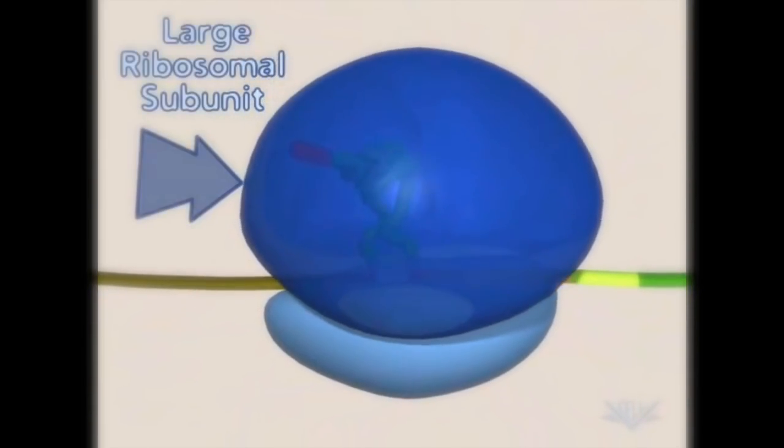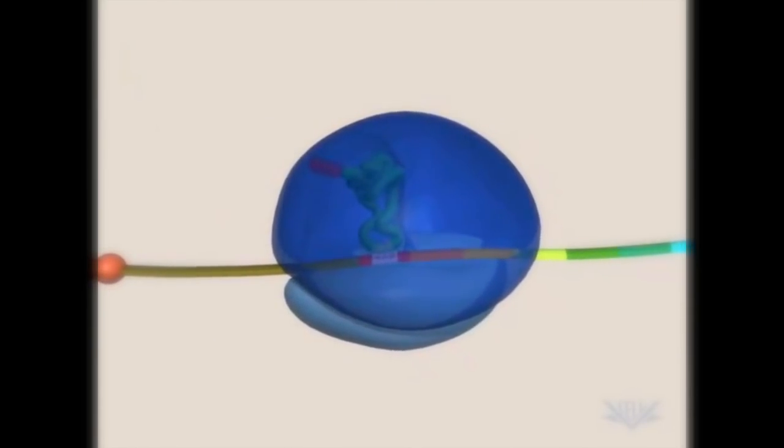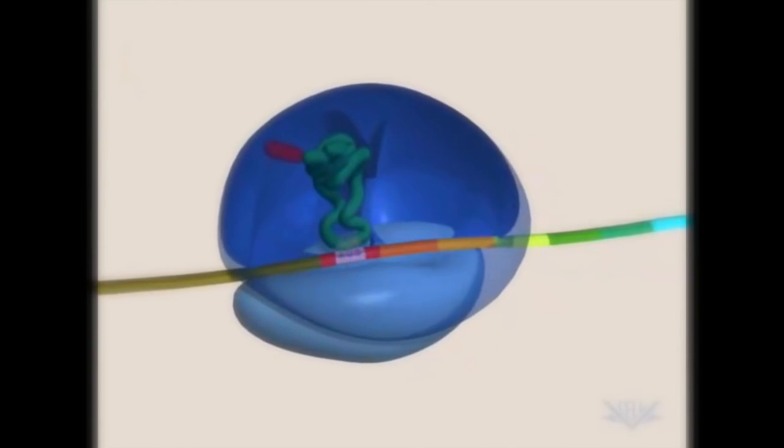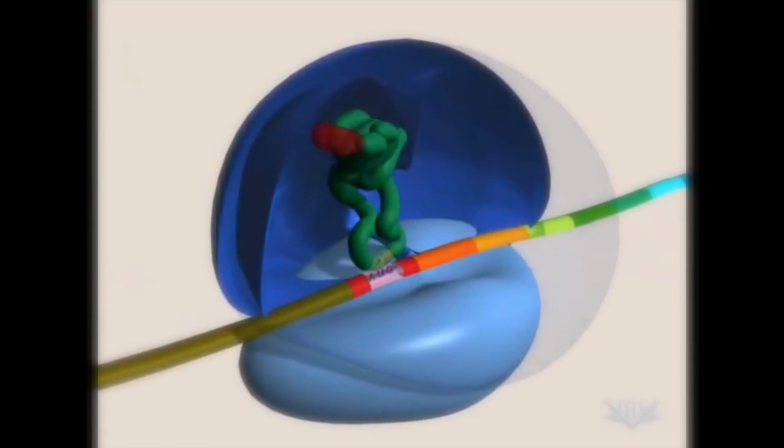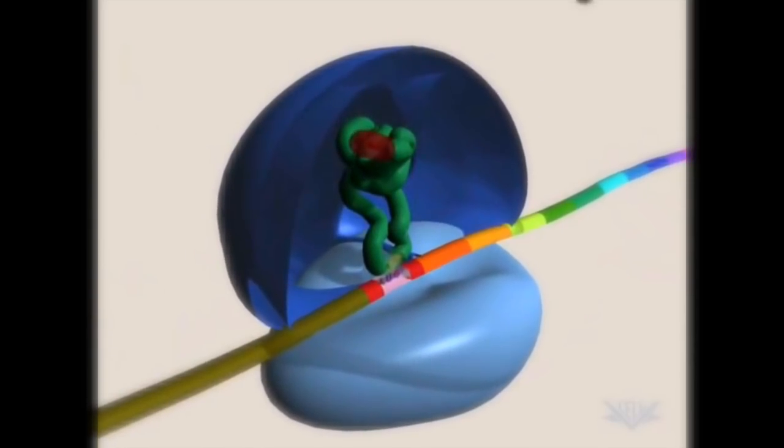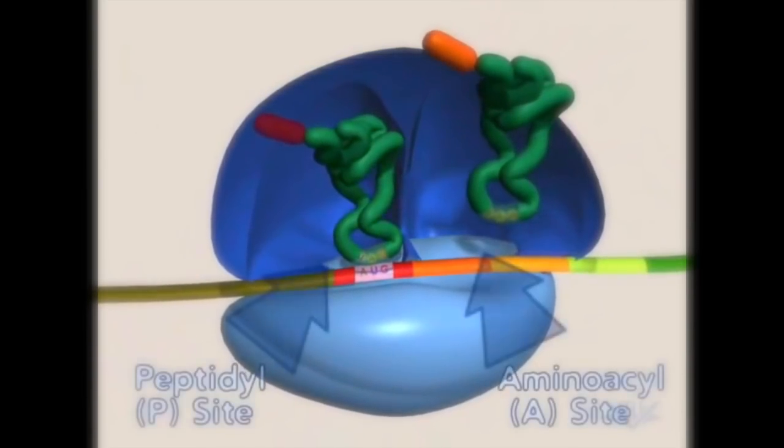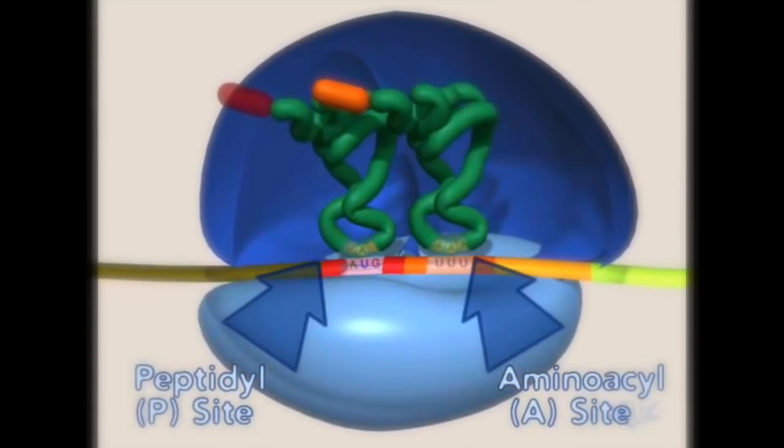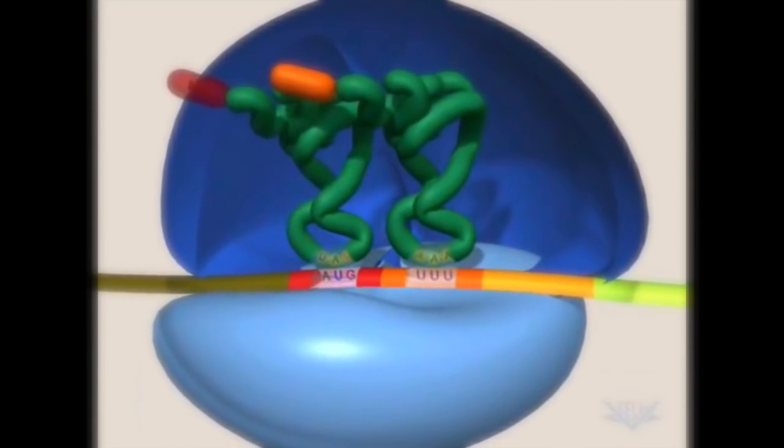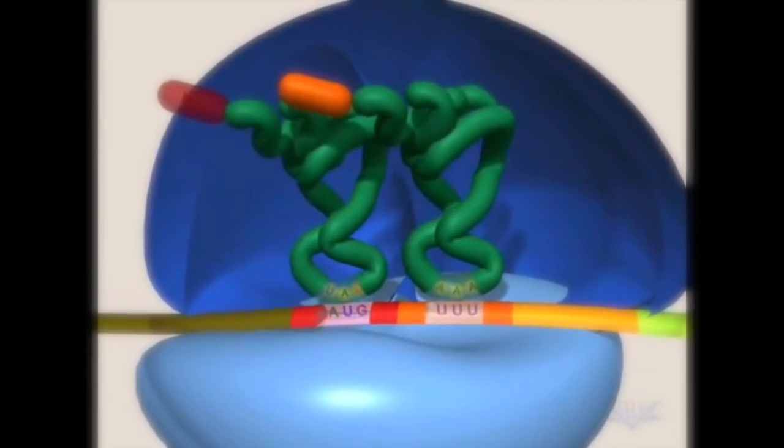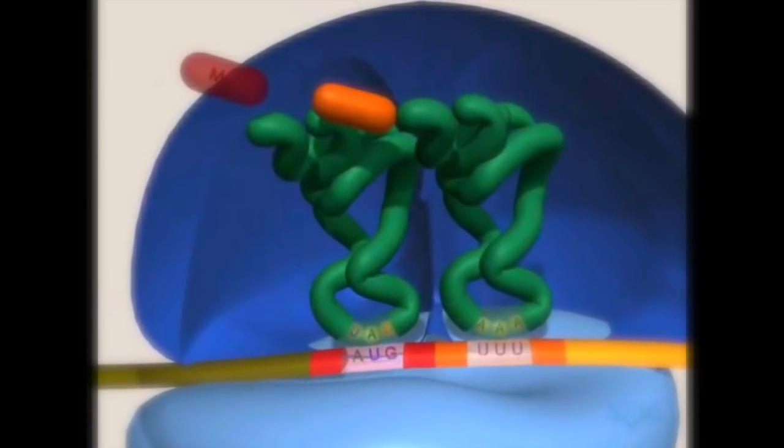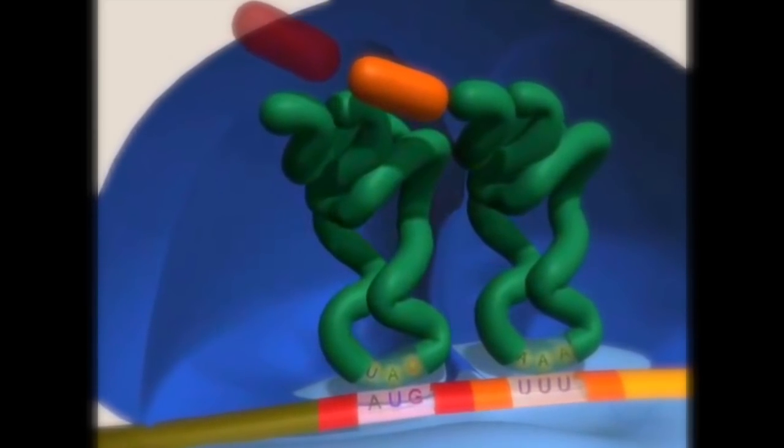The large subunit of the ribosome now binds to create the peptidyl, or P-site, and the aminoacyl, or A-site. The first tRNA occupies the P-site. The second tRNA enters the A-site and is complementary to the second mRNA codon. The methionine is then transferred to the A-site amino acid.